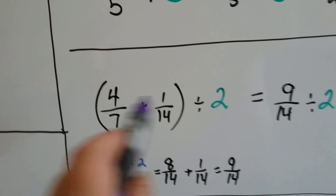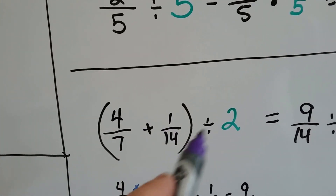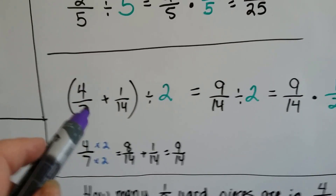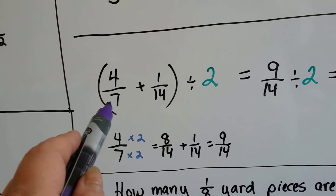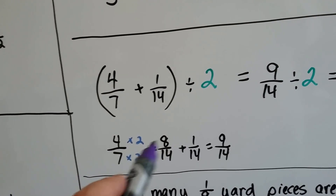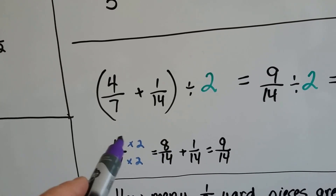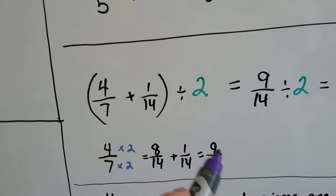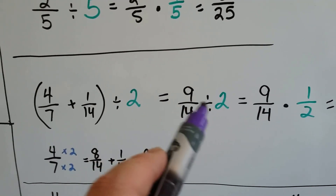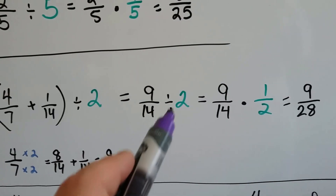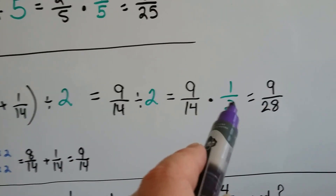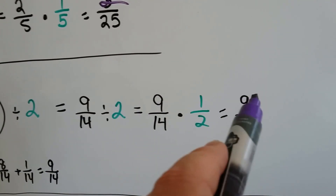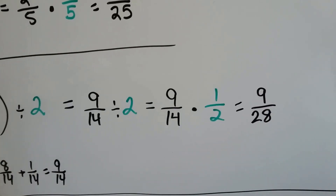What if we have a more difficult problem like this: 4 sevenths plus 1 fourteenth, all divided by 2? We're supposed to do the parentheses first, according to order of operations. So let's give them the same denominator — 4 sevenths can be multiplied by 2 to become 8 fourteenths (4 times 2 is 8, and 7 times 2 is 14). Now we can add it to the 1 fourteenth and get 9 fourteenths. Then we divide by 2 by putting the 2 over a 1 and flipping it to a half. So 9 fourteenths times a half: 9 times 1 is 9, and 14 times 2 is 28, giving us 9 twenty-eighths.